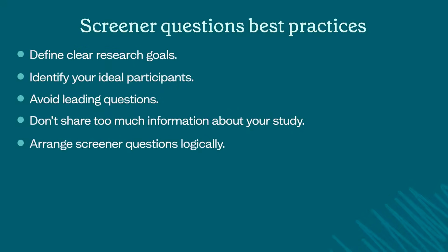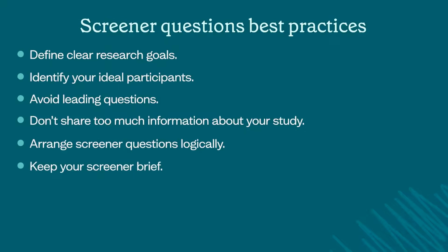Next, arrange your screener logically, starting with general questions and then moving on to more specific ones. This helps to keep participants engaged and ensures you're only collecting relevant data. And keep your screener short and to the point — a short screener is more likely to be completed, especially when you're looking for people with specific traits.